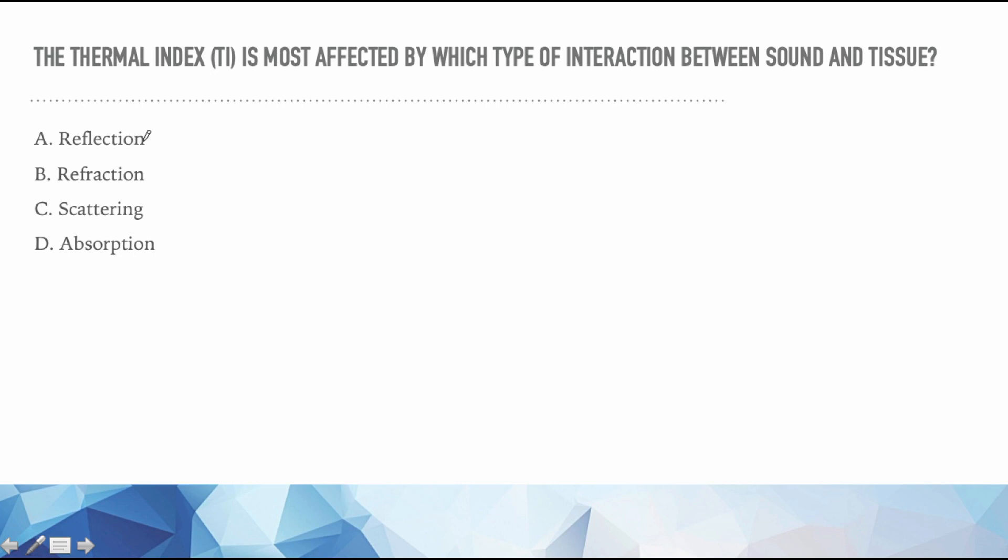So this question I like because you see that our answers are very similar to answers we had in another question. So we've already thought through what's reflection, refraction, scattering and absorption. So a prior question can help you answer a later question. This one says the thermal index is most affected by which type of interaction between sound and tissue. What are our important words? Well thermal index and it's most - not least, most - and then it'll be a type of interaction. So we know these are all interactions between sound and tissue, so what's going to cause our thermal index to increase the most? Well what does this mean? What's a thermal index? Well it's thermal like a thermometer. It's heat. What's going to cause heat?